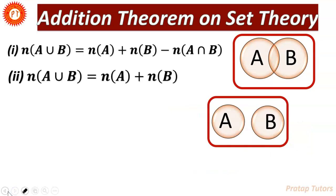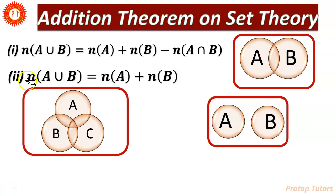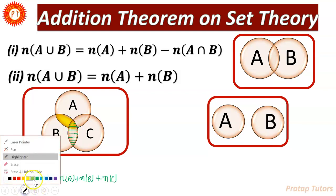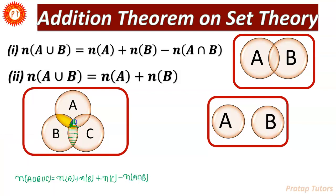Now suppose that you have three non-empty sets, then we can write n(A∪B∪C) and this is equal to n(A) plus n(B) plus n(C). Here we can see that the common areas are added twice, so we simply subtract the common regions: minus n(A∩B), minus n(A∩C), and minus n(B∩C).